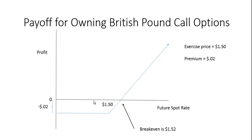If the exchange rate were $1.40 to buy one pound sterling, why pay $1.50 when you can just go to the marketplace and pay $1.40? A key part of this graph is the break-even point. Because you paid two cents for this option, the price of the pound has to rise to at least $1.52 for you to break even. If it rises above $1.52, you'll see positive profits. For example, if the price of the pound went up to $1.60, you could buy it for $1.50 and sell it for $1.60, and after the two-cent premium you'd make an eight-cent profit.